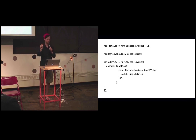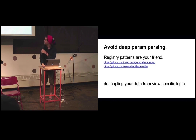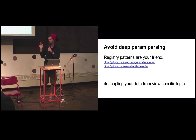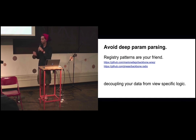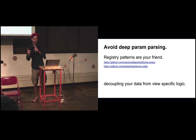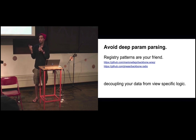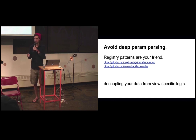So our layouts have regions, we have data and options — easy. We want to avoid deep param passing, so we're going to register our data at the top level. There are cool registry patterns we can use. Backbone Radio happens to be one of those things — you can register with requests and get that data whenever you want it. Your root object can be a pub-sub kind of object, or you can just attach it to window. That's always good.